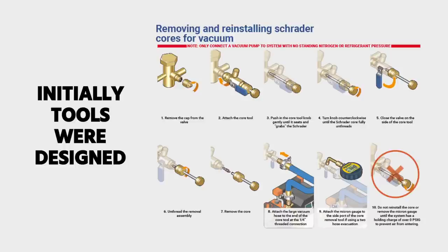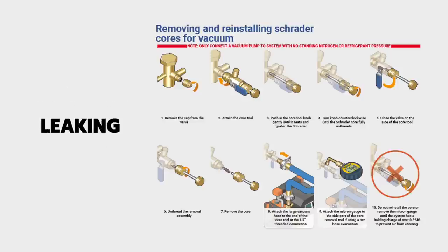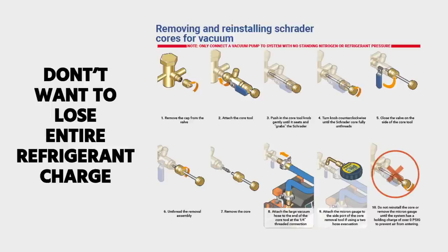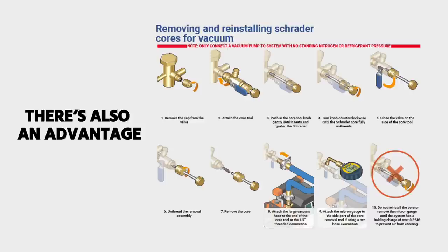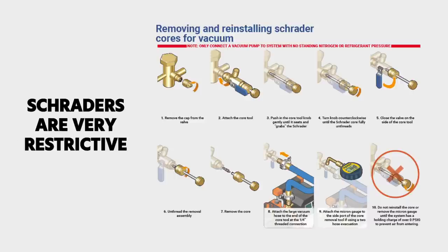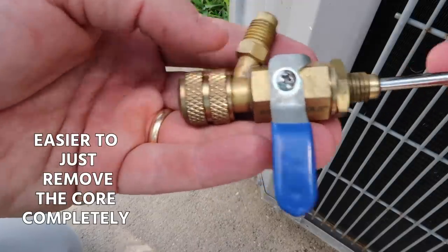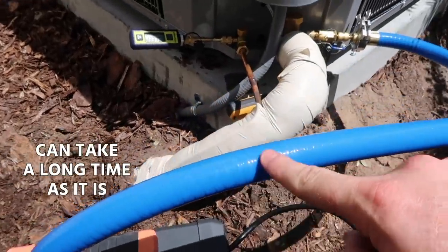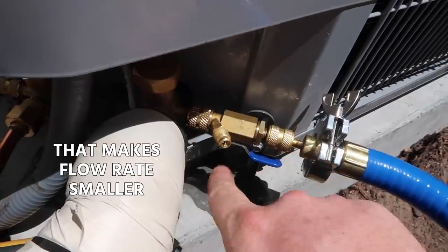Initially, these tools were designed for cases where you had a damaged core that was leaking, maybe overheated or the seal failed for some reason. You want to pull it out but don't want to lose the entire refrigerant charge. But then we realized there's also an advantage because Schraders are very restrictive. To overcome that restriction, it's easier to just remove the core completely before we do things like evacuation or recovery, which can take a long time, let alone when you have a restriction that makes the flow rate smaller.